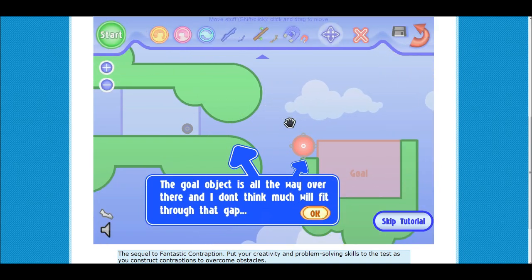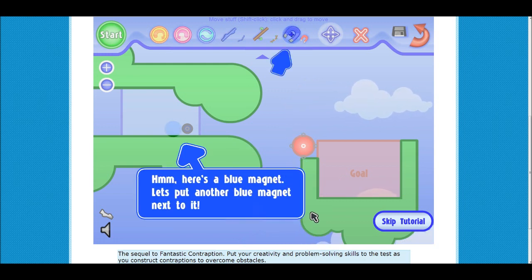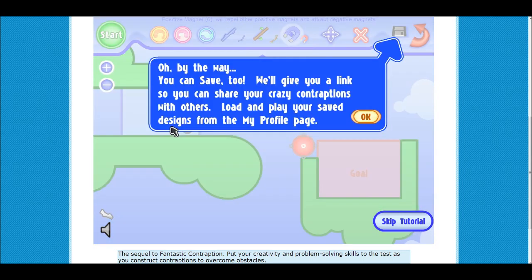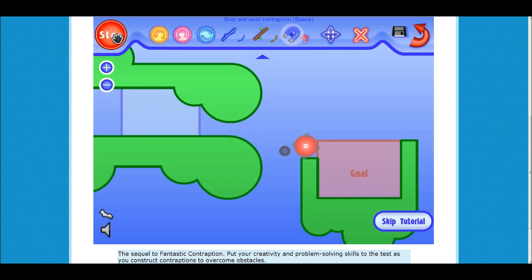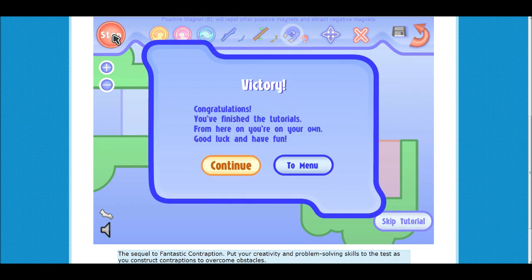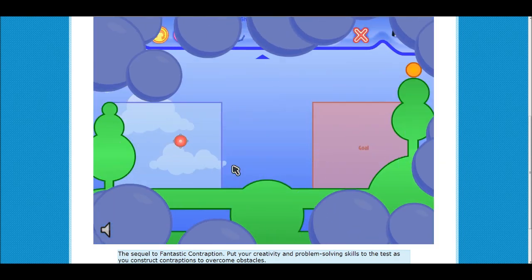The goal of this object is all the way over there, but I don't think much will fit through the gap. There's a blue magnet there. Put another blue magnet next to it. So if I put a magnet here, what does a blue magnet do? It repelled that.